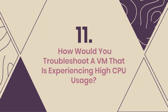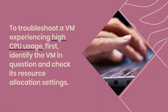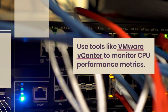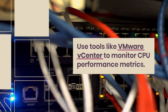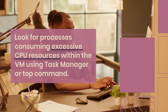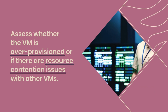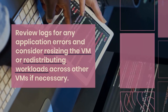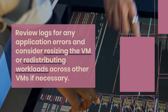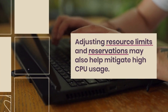Question 11: How would you troubleshoot a VM that is experiencing high CPU usage? To troubleshoot a VM experiencing high CPU usage, first identify the VM in question and check its resource allocation settings. Use tools like VMware vCenter to monitor CPU performance metrics. Look for processes consuming excessive CPU resources within the VM using Task Manager or the top command. Assess whether the VM is over-provisioned or if there are resource contention issues with other VMs. Review logs for any application errors and consider resizing the VM or redistributing workloads. Adjusting resource limits and reservations may also help mitigate high CPU usage.